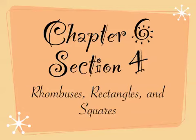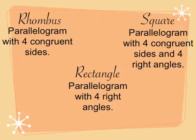Chapter 6, Section 4: Rhombuses, Rectangles, and Squares. A rhombus, rectangle, and square are all parallelograms — quadrilaterals that are parallelograms — but we're going to be more specific. A rhombus is a parallelogram with four congruent sides. A rectangle is a parallelogram with four right angles. And a square is a parallelogram with four congruent sides and four right angles.